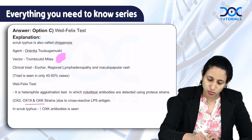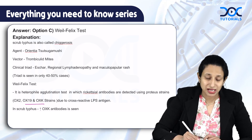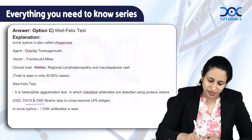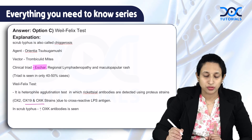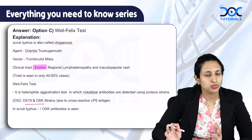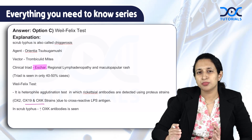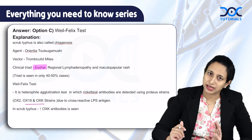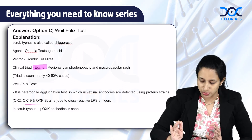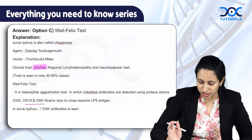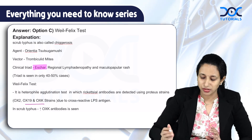Coming to the clinical triad: we usually talk about eschar, as discussed in the given clinical scenario. However, there is no history of regional lymphadenopathy and maculopapular rash, which are the other components of the triad. Many times this complete triad is not commonly seen. The finding which clinches the diagnosis here is the presence of eschar. The patient should undergo the Weil-Felix test, which is a heterophile agglutination test used to identify rickettsial antibodies using various Proteus strains.